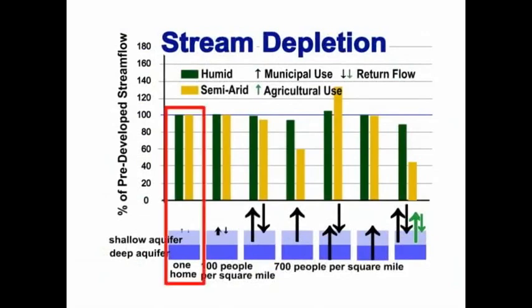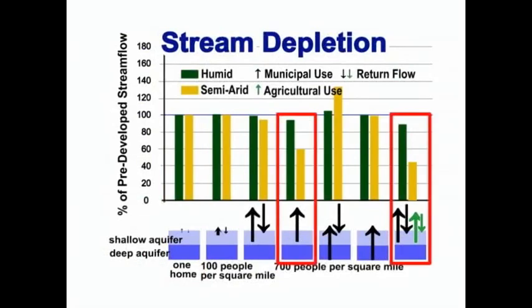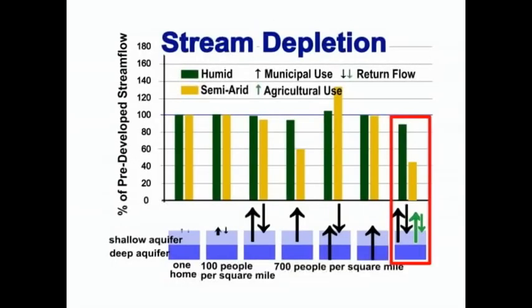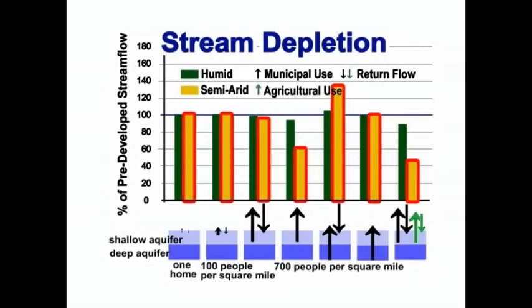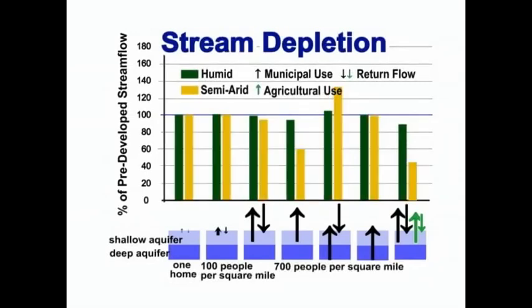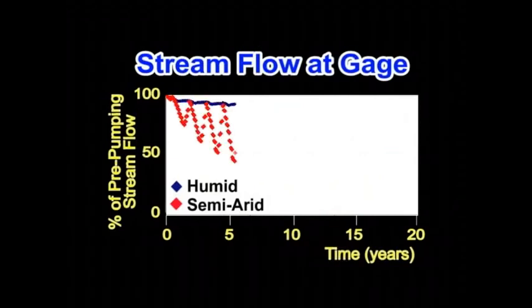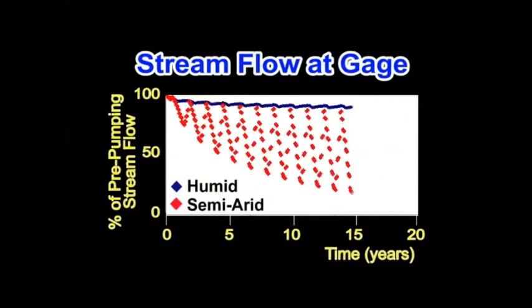A single home has no measurable impact. The greatest impact on streamflow occurs for cases where more water is withdrawn from the shallow aquifer with less return. The addition of irrigated agriculture, with water withdrawn from the local aquifer, has a substantial impact on streamflow. When the same amount of water is used in both basins, the impact is larger on the semi-arid basin because less water is available. With a combination of irrigated agriculture and 700 people per square mile, the percent of stream depletion and the magnitude of cyclic variation is larger in the semi-arid environment, even though it takes longer for the full stream depletion to occur.